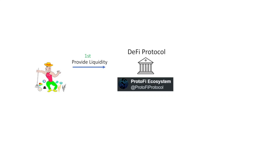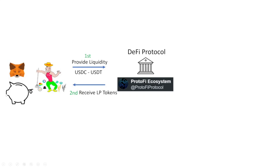The first step is to provide liquidity to the DeFi protocol — this is just like a bank in the real world where you lend your savings. In exchange for that liquidity — in this case USDC and USDT tokens — we're going to receive LP tokens. LP tokens are basically proof that we've invested money in this DeFi protocol. If you ever want your USDC or USDT back, you'll need to return those LP tokens. To interact with the protocol we'll be using MetaMask.